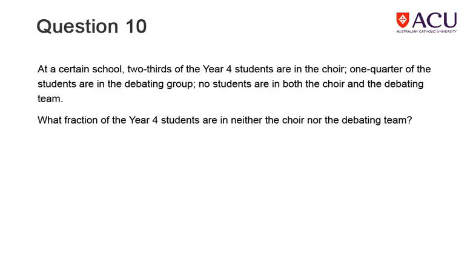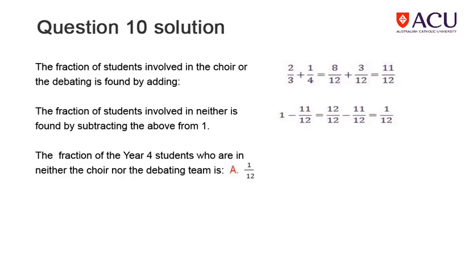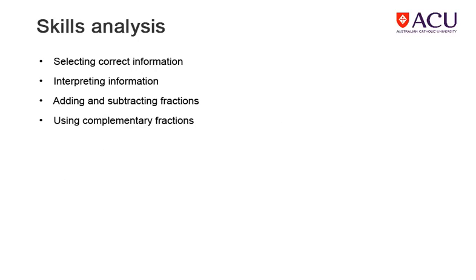This final question contains information about students in Year 4. Read the information and choose your answer to the question from the four choices. The solution contains an explanation of and calculations for the correct answer. This type of question relies on your ability to select the correct information from the wording of the question, to process that information, and to call upon the skills of manipulating fractions in order to find the solution.